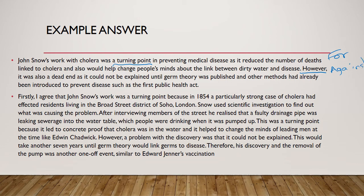So let's get straight in. Firstly, I agree that Jon Snow's work was a turning point because in 1854 — nice use of date — a particularly strong case of cholera had affected residents living in the Broad Street district of Soho, London. That's my point. Snow used scientific investigation to find out what was causing the problem — there's my example or piece of evidence. After interviewing members of the street, he realised that a faulty drainage pipe was leaking sewage into the water table, which people were drinking when it was pumped up. Here's my explanation of why it was a turning point.